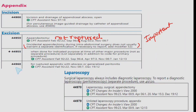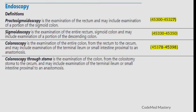Code 44960 is for appendectomy with a ruptured appendix. The key distinction: 44950 is for appendectomy where the appendix is not ruptured, and 44960 is for ruptured appendix. Code 44970 is for laparoscopic surgical appendectomy — if the scenario mentions laparoscopic surgical appendectomy, use 44970. Code 44979 is used for unlisted laparoscopy procedure of the appendix.